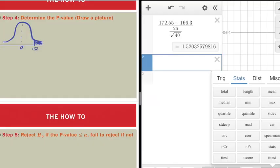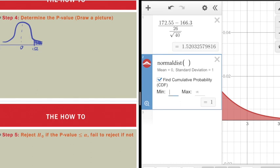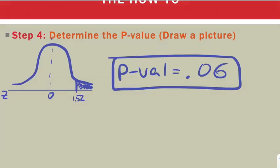And we're going to go back to decimals. I'm going to go to distributions, normal dist, and I'm going to go cumulative from 1.52 to infinity, which gives me a p-value of 0.06. And we're ready to move on to the next step.